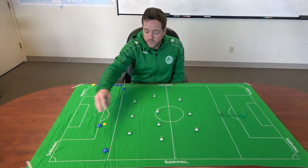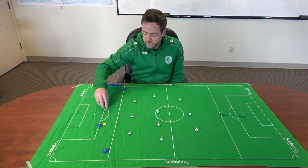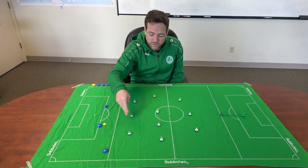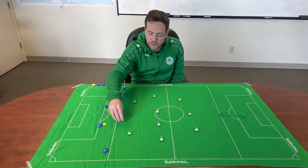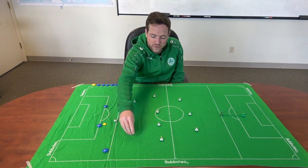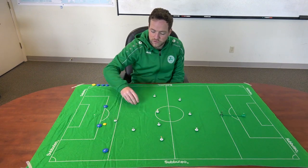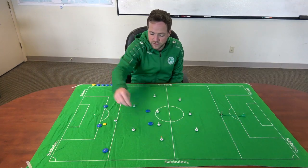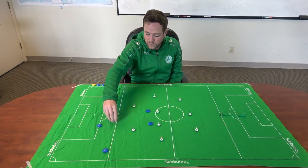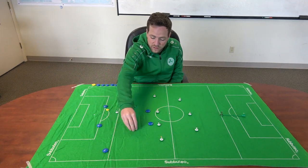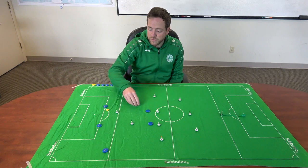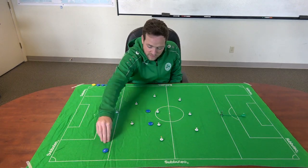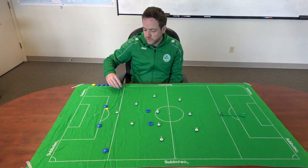When the ball is with the center backs, the center of the front three is the person who puts on pressure. As they go, they need cover — we're trying to prevent passing lanes into their center midfielders. As the ball moves, we look to move and put pressure on, making it very difficult for them to play forward. They'll just play the ball sideways the whole time — sideways and backwards.